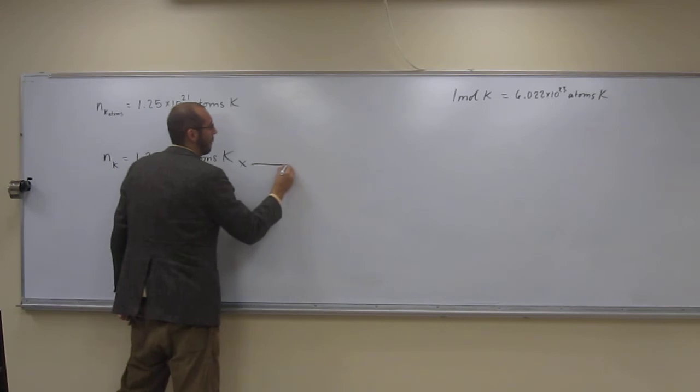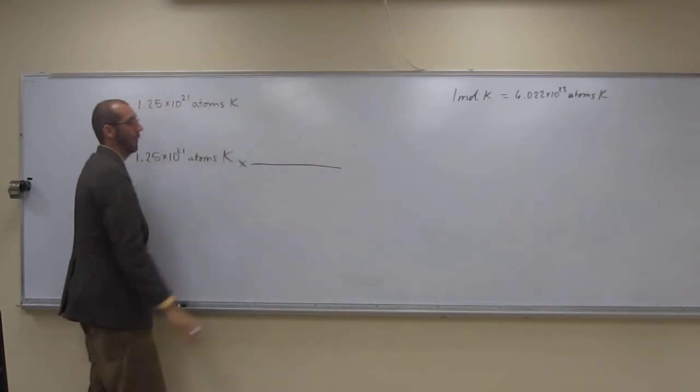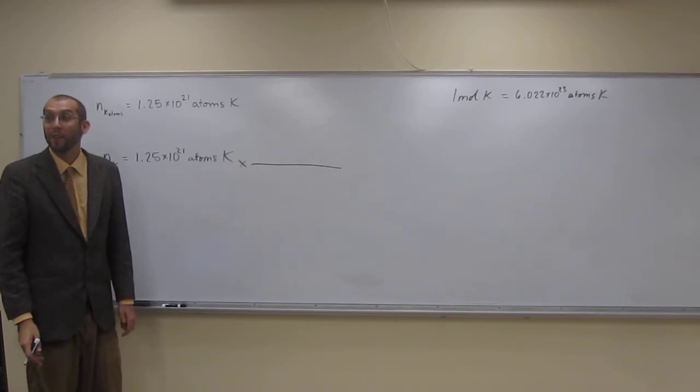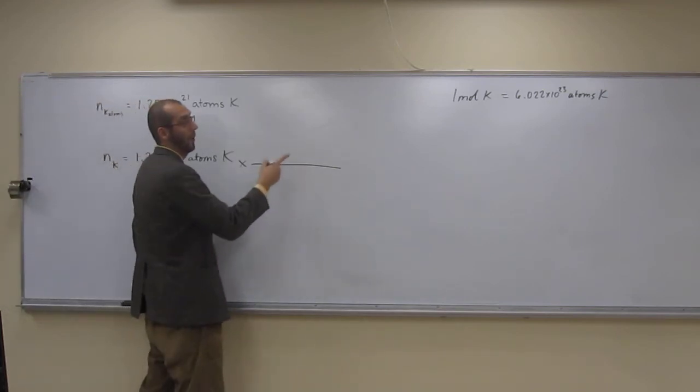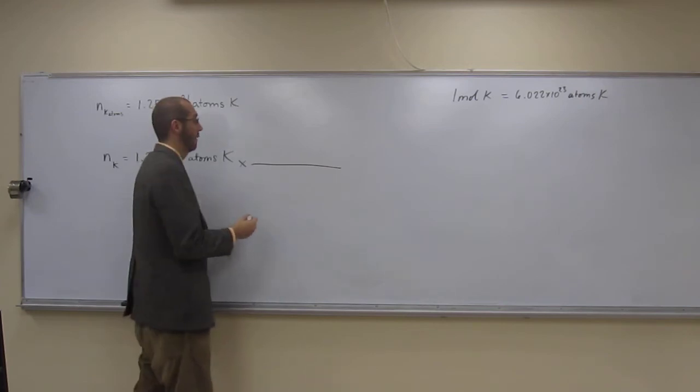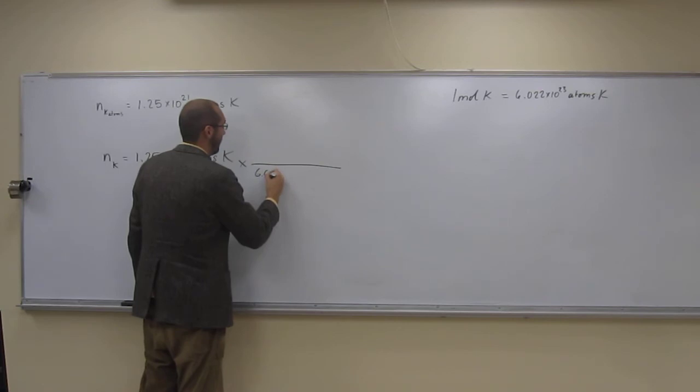Okay, so all we're going to do is multiply that. What units are we going to put on the bottom? Atoms of potassium. Okay, so which one, which number is that? 1 or 6.022? Yeah, the 6.022.